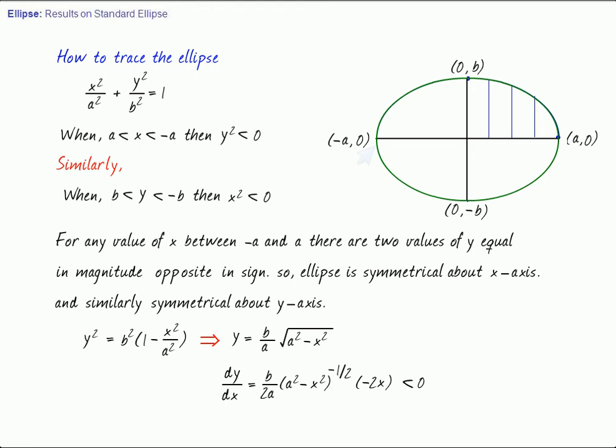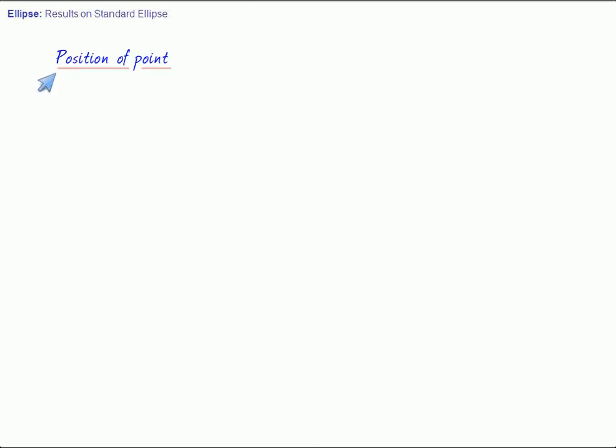Now, position of a point with respect to an ellipse. Suppose x1, y1 is a point. We can easily show, if x1 square upon a square plus y1 square upon b square is less than 1, the point x1, y1 lies within the ellipse. Otherwise, it lies outside. If it is greater than 1. If it is equal to 1, it lies on the ellipse. It can be easily shown.